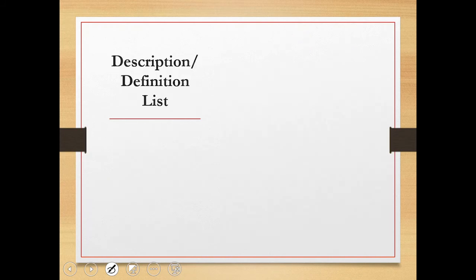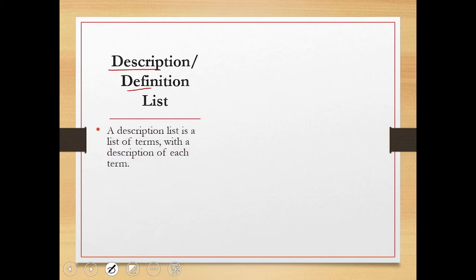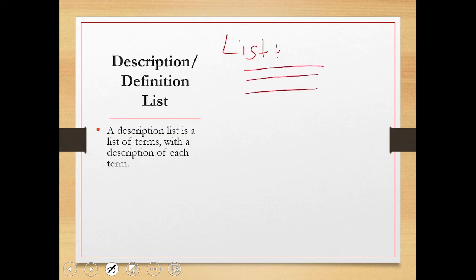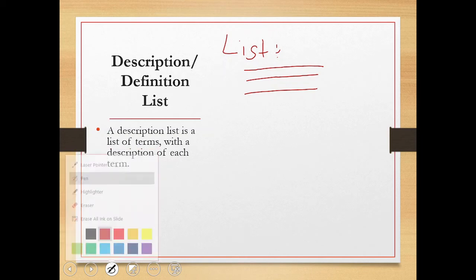Next is the description or definition list. As the name suggests, you are talking about a term and defining it. A description list is a list of terms with a description of each term. If you search for the definition of the term 'list' in a browser, you get the term and then its definition. The pattern is: write the term you want to define, then write the data — the definition — for that term.